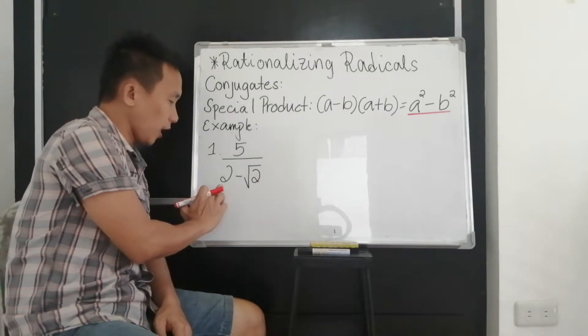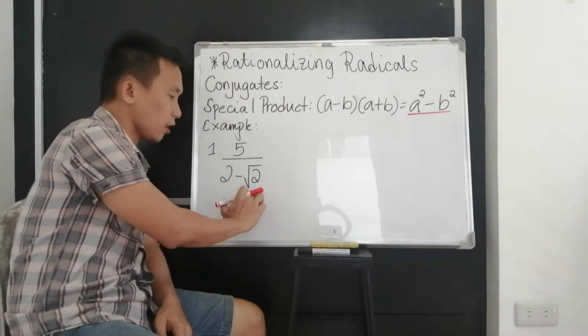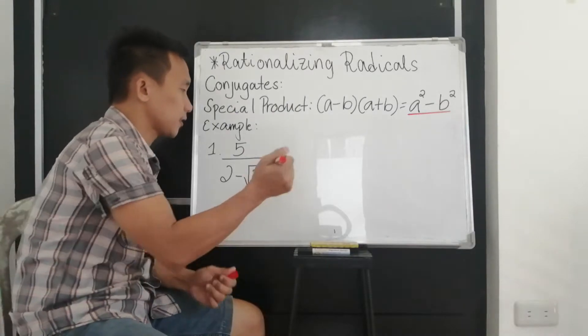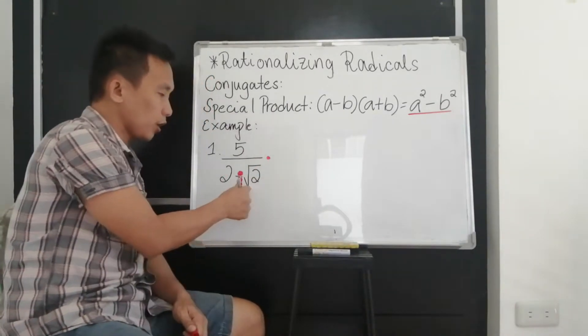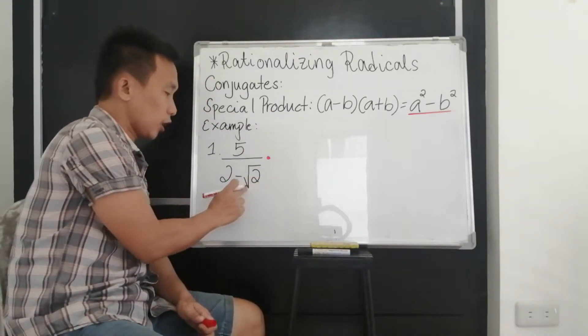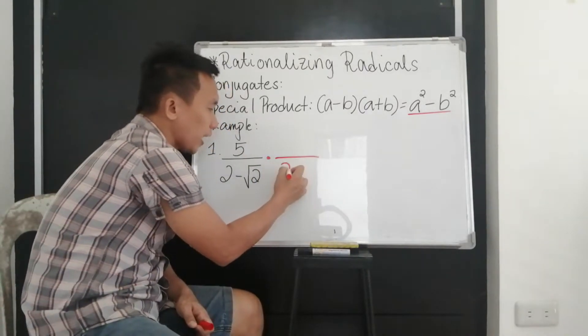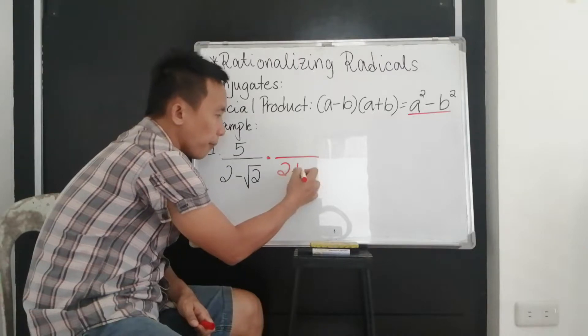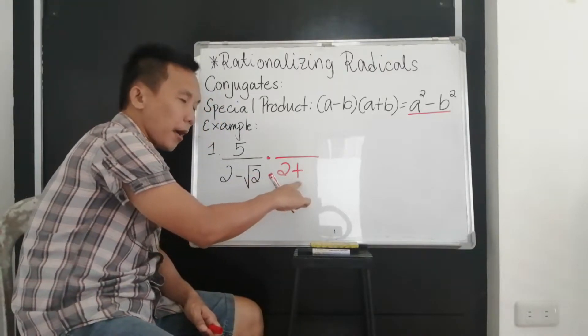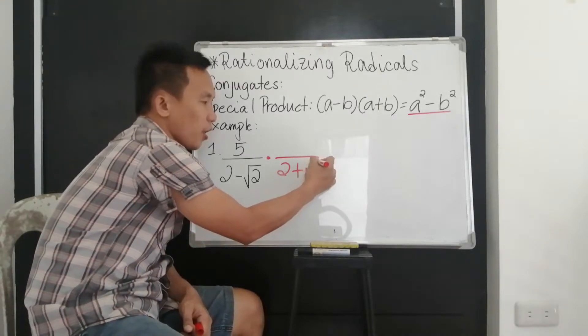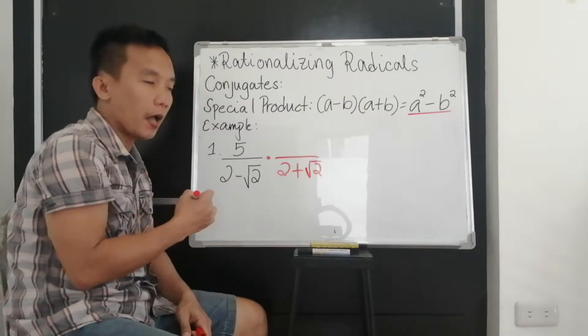So take note, our denominator is 2 minus the square root of 2. It has our radicals. Now if you have this, you are going to multiply its conjugates. So since this is minus, the conjugate for that will be plus. It is the same number, but the operation now is plus.